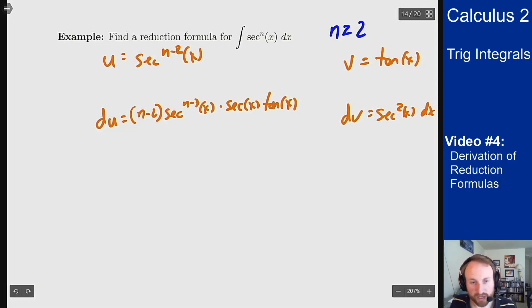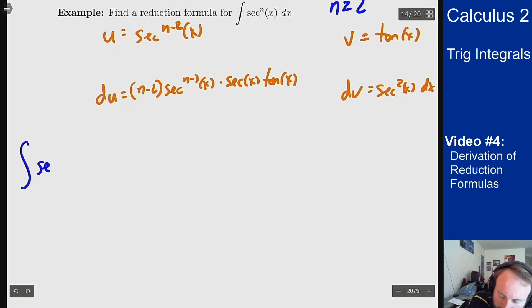But now we can do integration by parts. So the integral of secant to the n of x dx, that's our udv, equals uv.